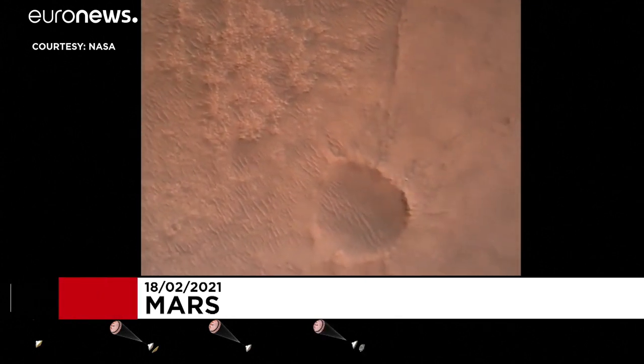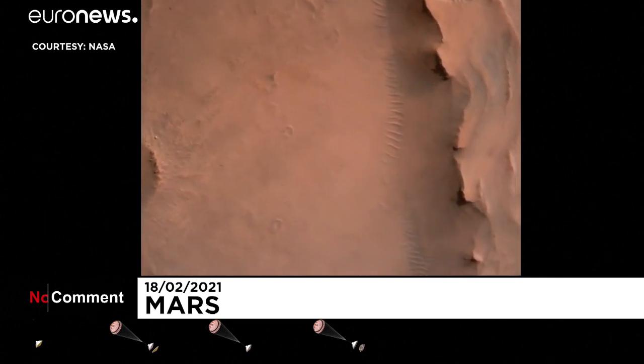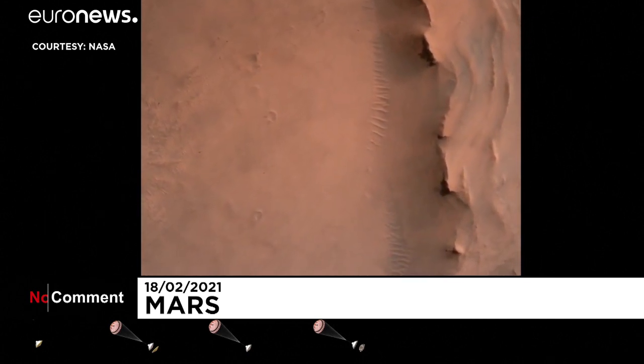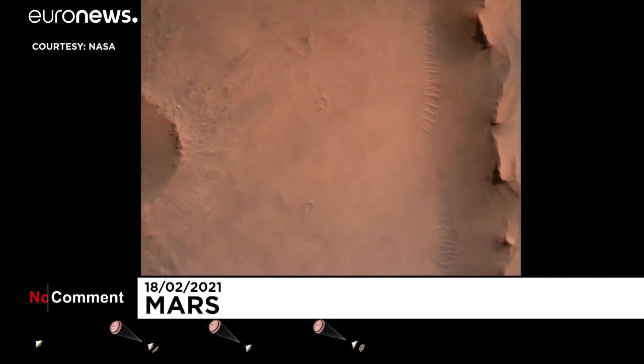Back shell set. Current velocity is 83 meters per second at about 2.6 kilometers from the surface of Mars. We have confirmation that the back shell has separated.